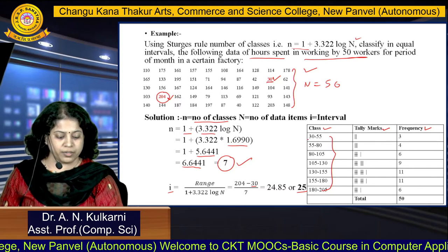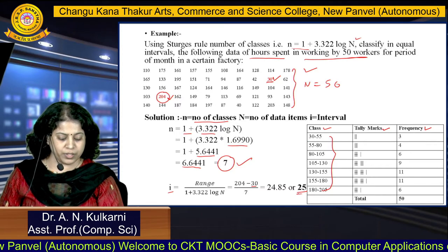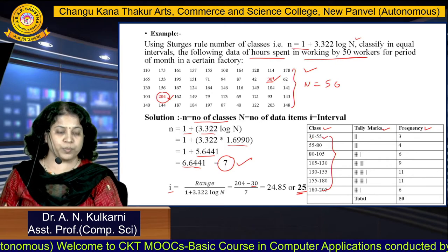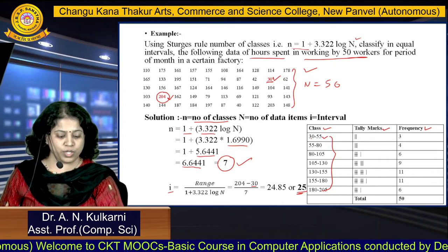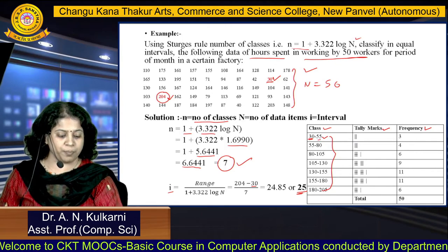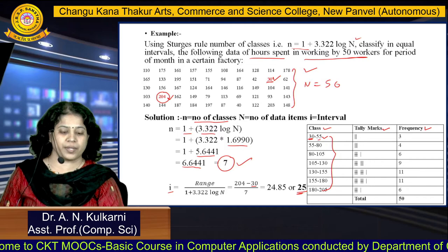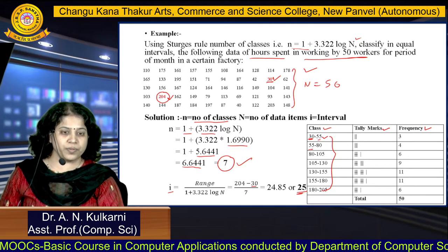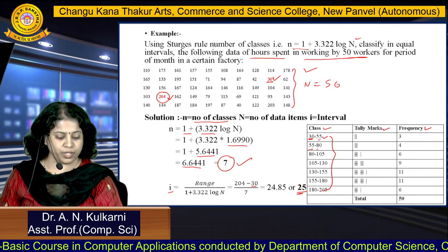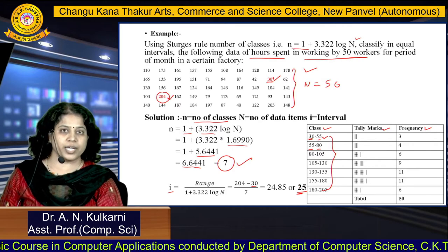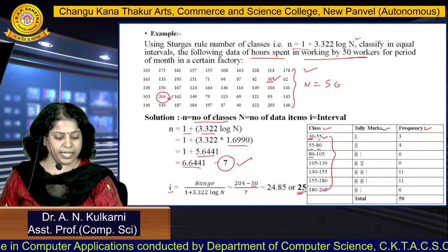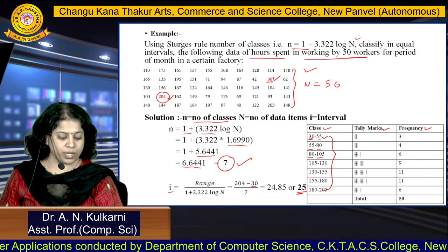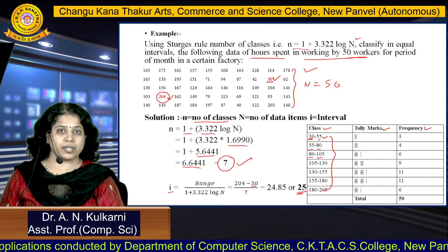Start from 30. Adding the interval of 25: 30 + 25 = 55, so the first class is 30 to 55. The next class starts from 55: 55 + 25 = 80, giving 55 to 80. Then 80 + 25 = 105, giving 80 to 105, and so on for all 7 classes.